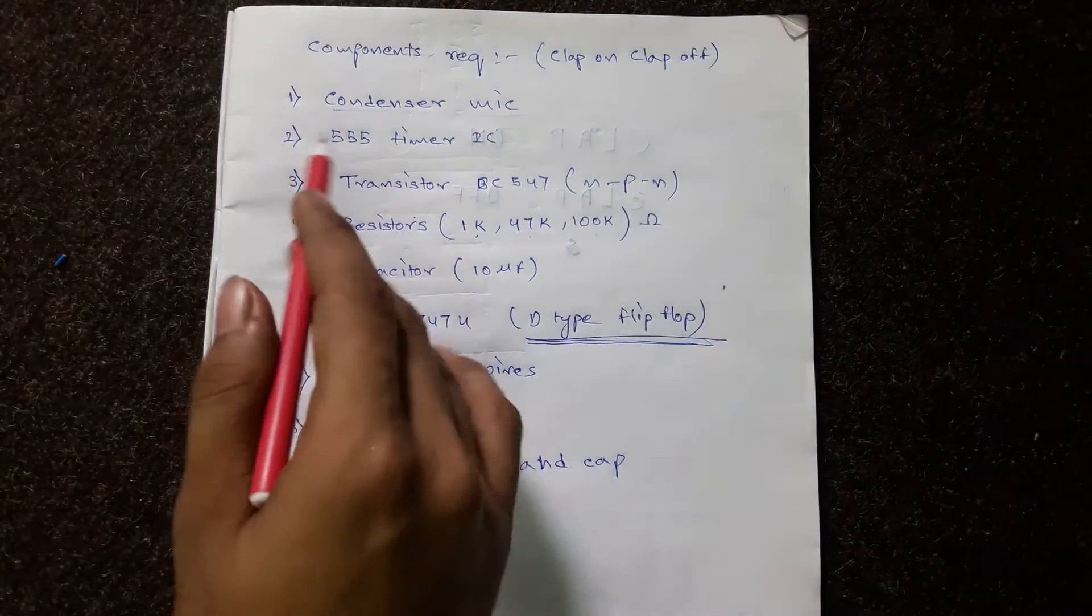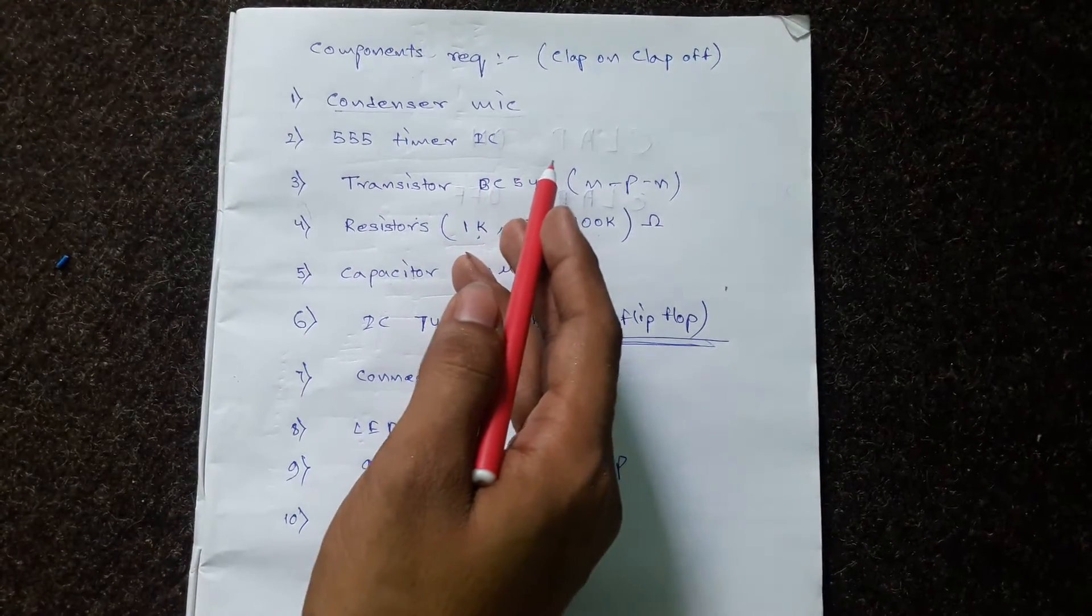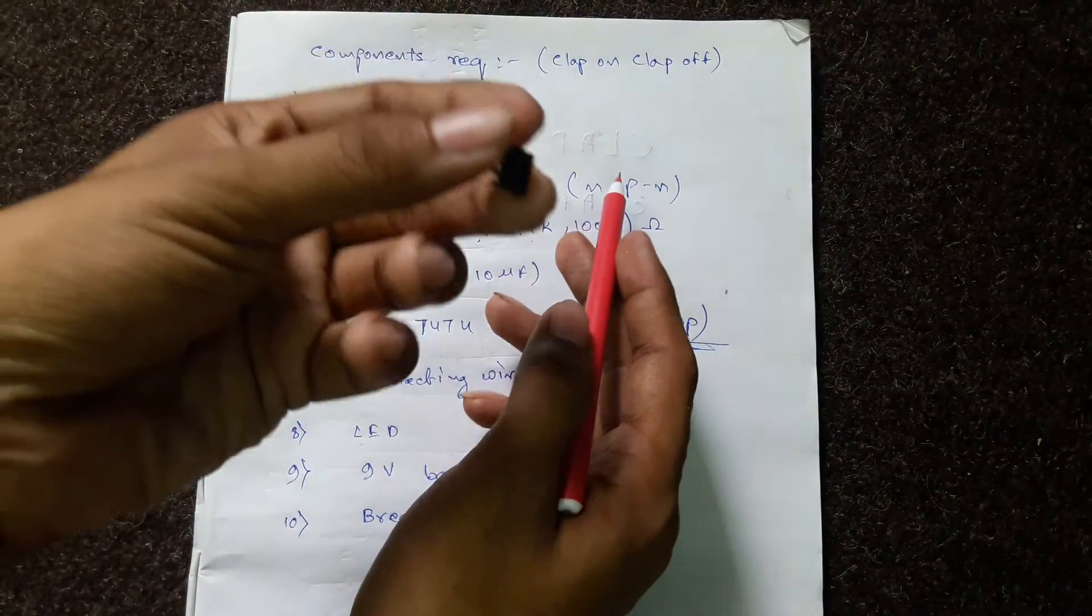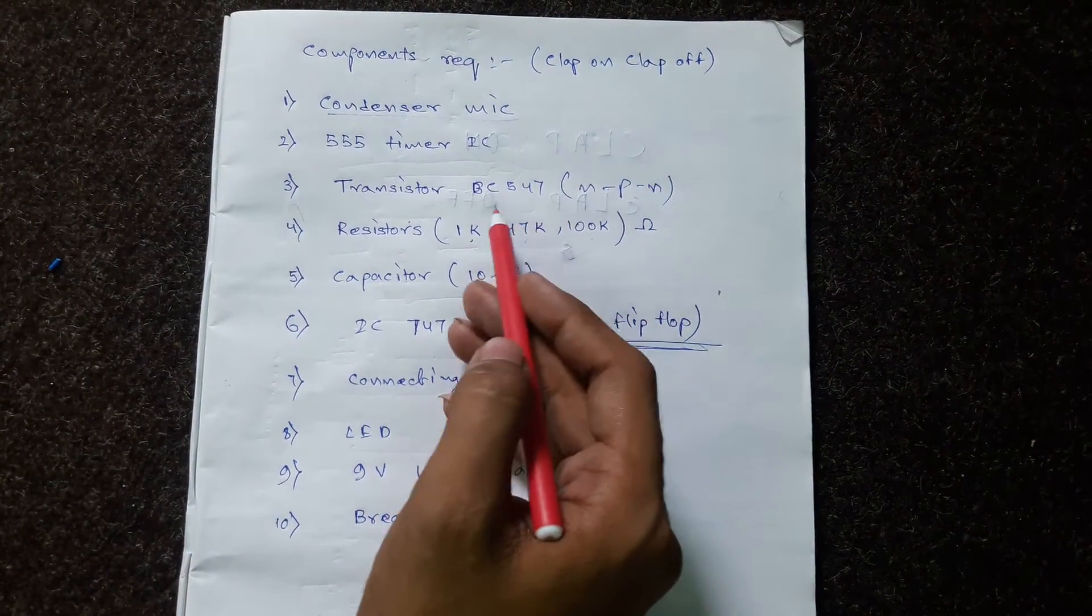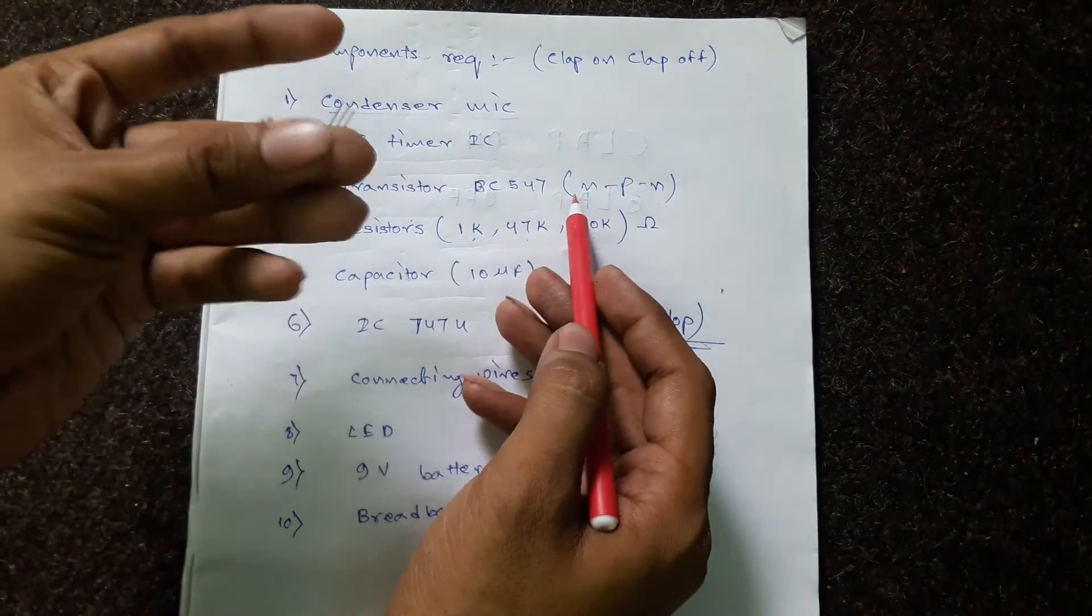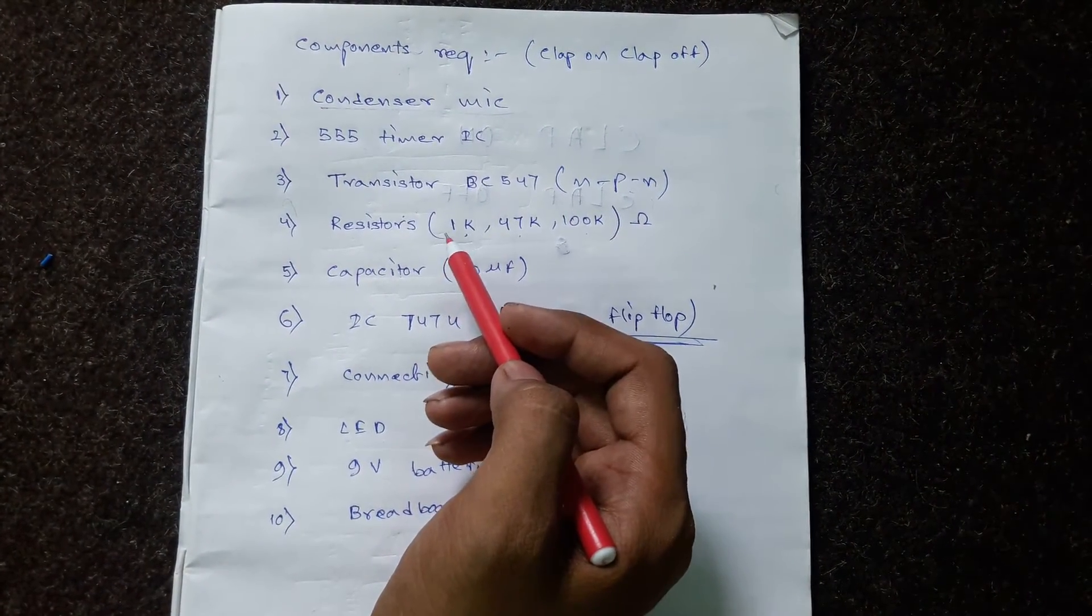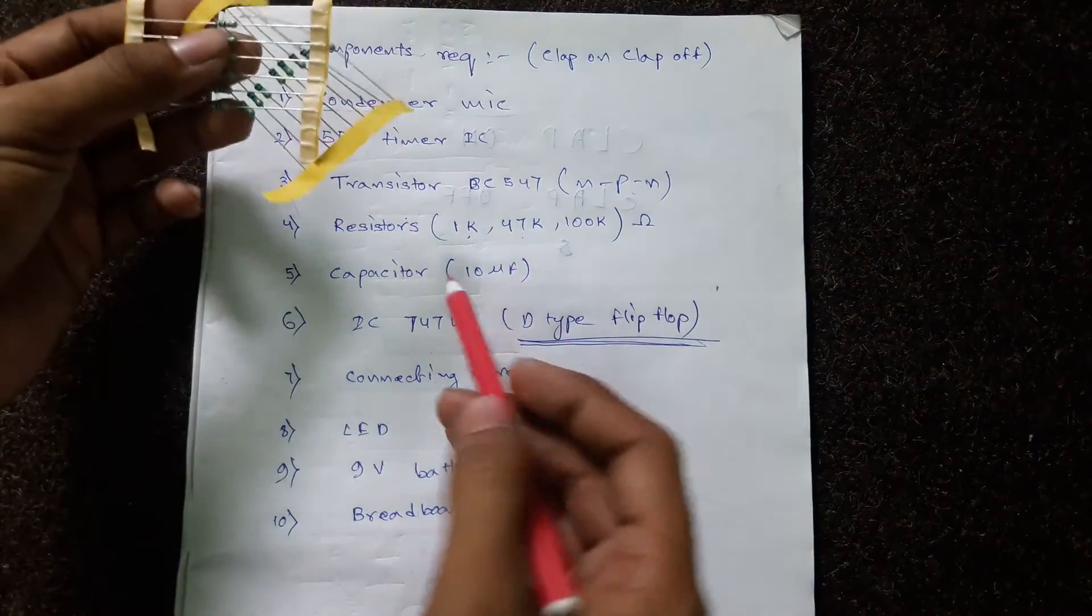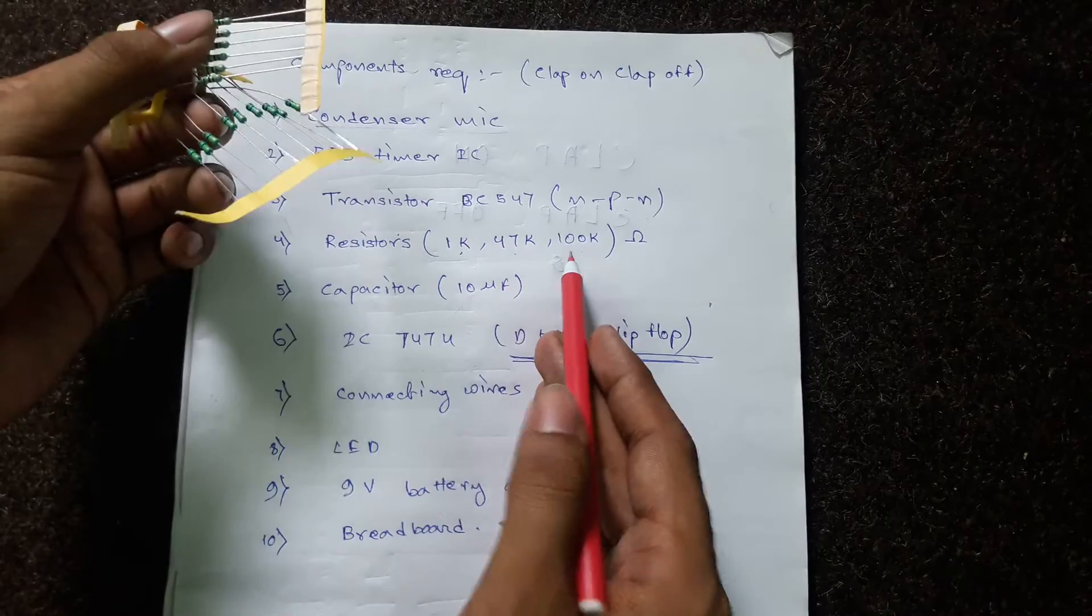First is the condenser mic. The second one is the 555 timer IC. Third is a transistor BC 547, an NPN transistor. The fourth component is some resistors, specifically the values are 1K, 47K, and 100K.